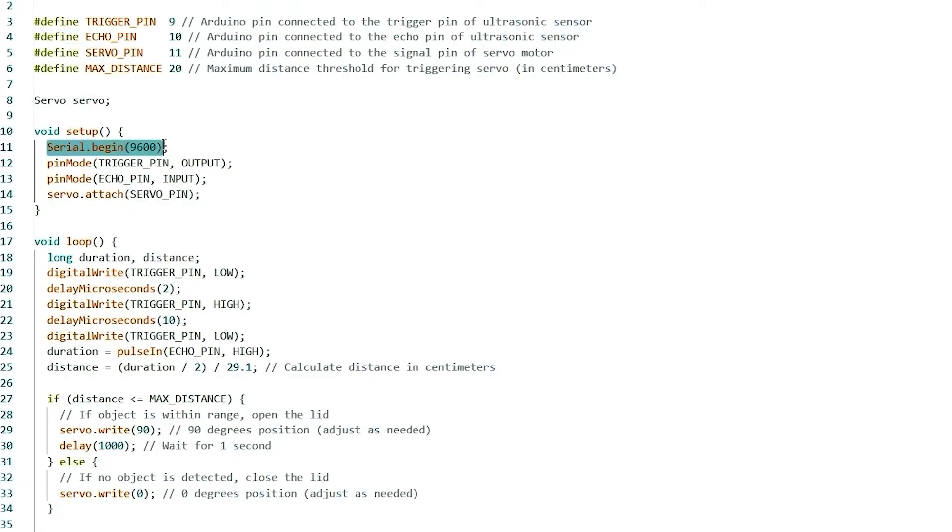In the setup function, we have initialized the serial communication and attached the servo motor to its pin. Finally, in the loop function, we'll read data from the ultrasonic sensor and use it to control the servo motor. You can also change the parameters as you wish.